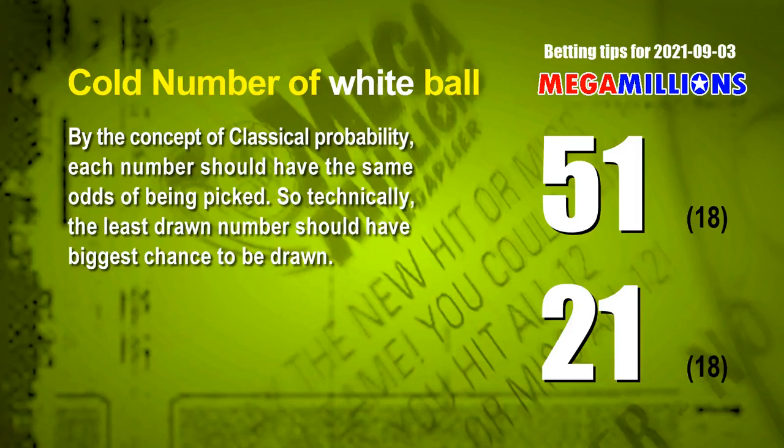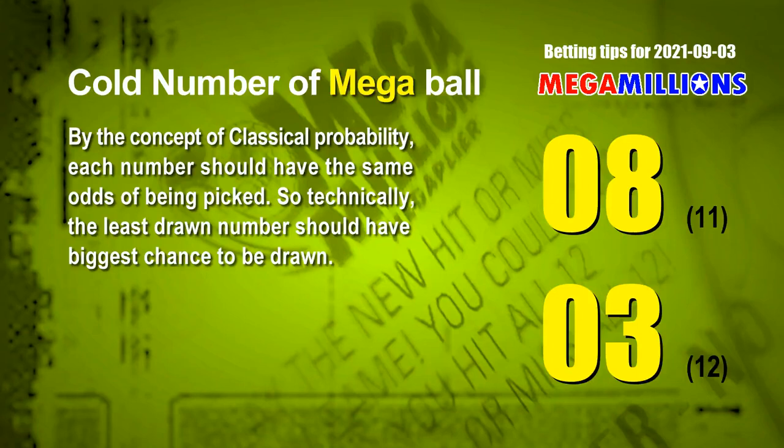At the end of this video, we have two more tips: cold numbers and overdue numbers. By the concept of classical probability, each number should have the same odds of being picked, so the least drawn number should have the biggest chance to be drawn. After counting hundreds of results, the two coldest white balls are 51 and 21 — each drawn only 18 times in the last 401 draws. The two coldest Mega Balls are 08 and 03 — drawn only 11 and 12 times respectively in the last 401 draws.